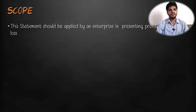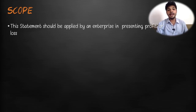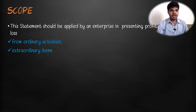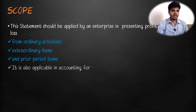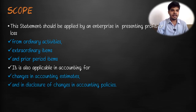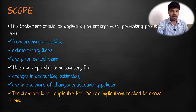The scope of this standard: it should be applied by an enterprise in presenting profit or loss from ordinary activities, from extraordinary items and prior period items. It is also applicable in accounting for changes in accounting estimates and disclosure of changes in accounting policies. This standard is not applicable for the tax implications related to the above items.